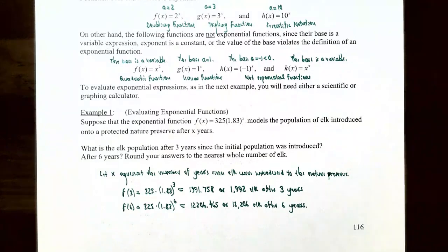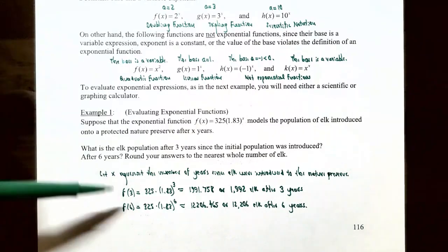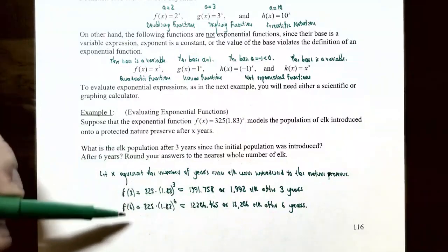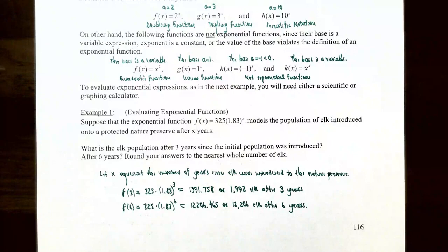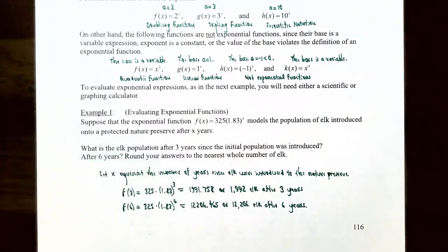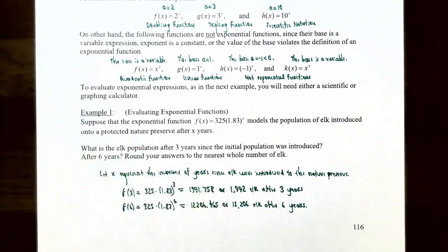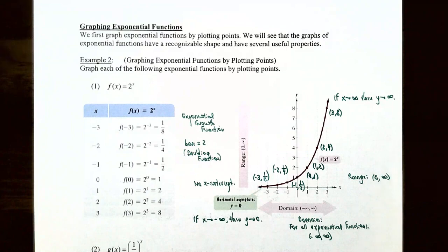Notice how quickly an exponential function grows. After 3 years the population was about 1,992, but only 3 more years later the population skyrocketed to about 12,206 elk — an increase of about 10,300 over just 3 years. This is not a linear function with a constant rate of change; this is an exponential function and it grows very quickly.